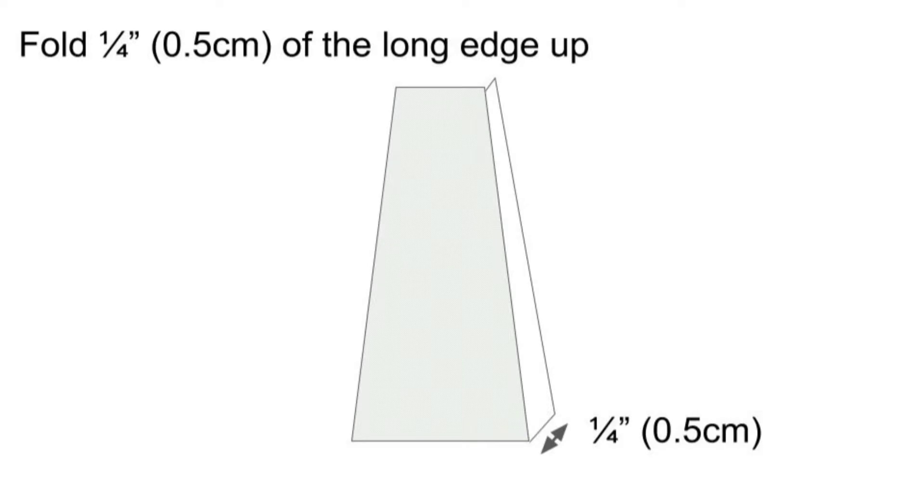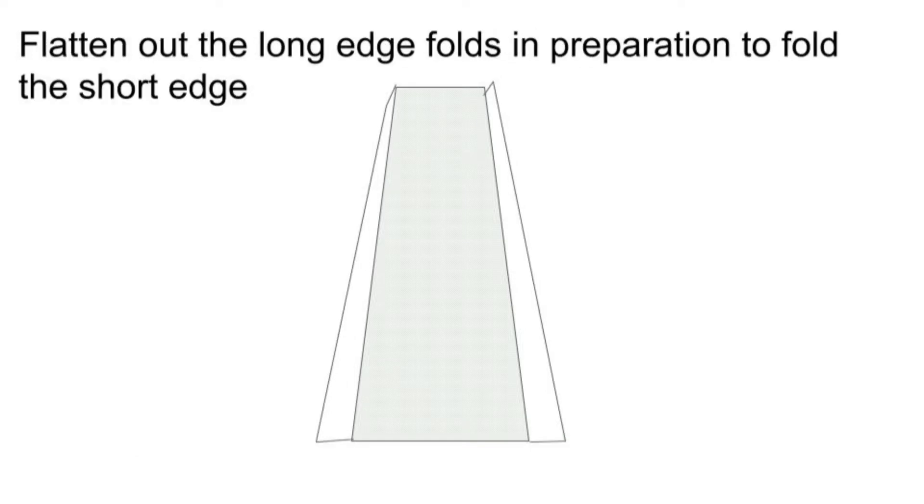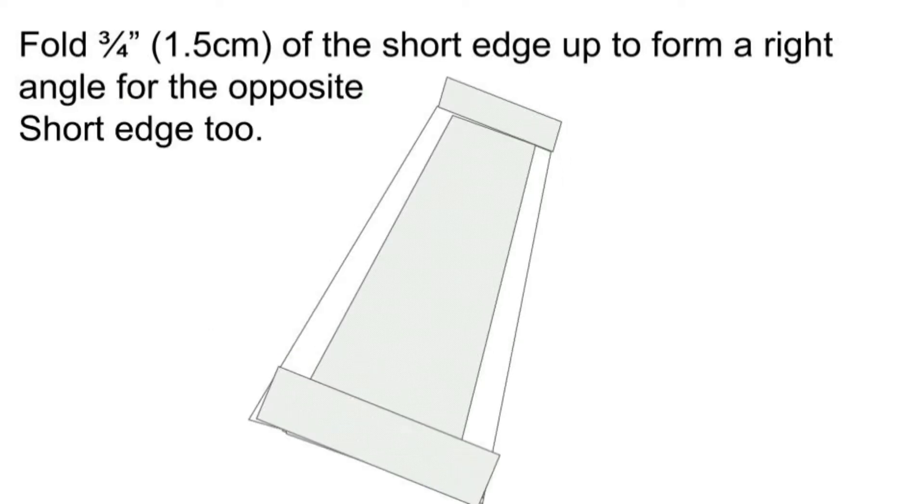We then fold about a quarter of an inch of the long edge up. Then fold the opposite long edge in the opposite direction, so one goes up and one goes down. Then flatten out the long edge folds at the short edge and fold the short edge up about three-quarters of an inch, and do the same for the opposite short edge.